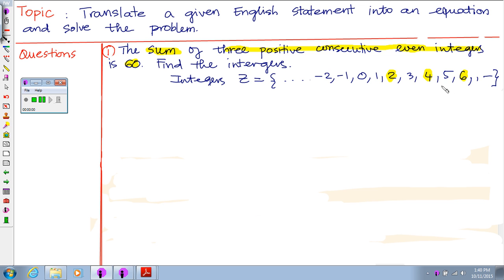So 2, 4, 6 will be the example of three positive consecutive even integers. Now if we add them up, 2 plus 4 plus 6, the sum is only 12, but we want the sum of 60. This means these are not the three even integers that we're looking for.